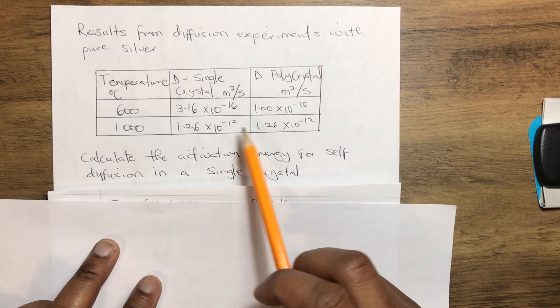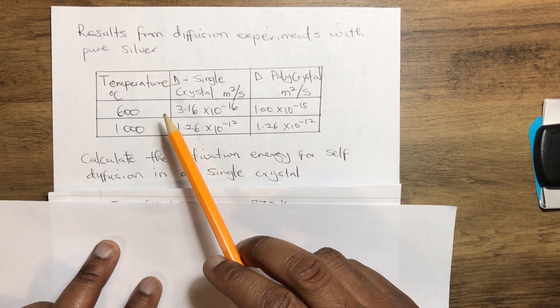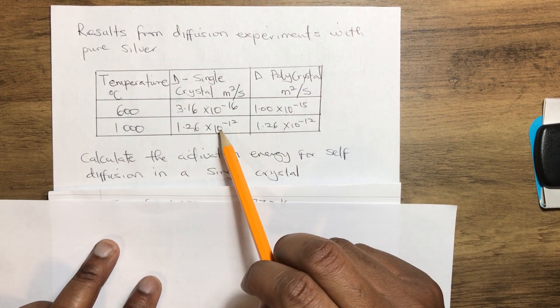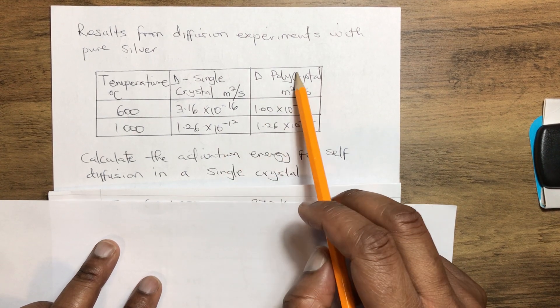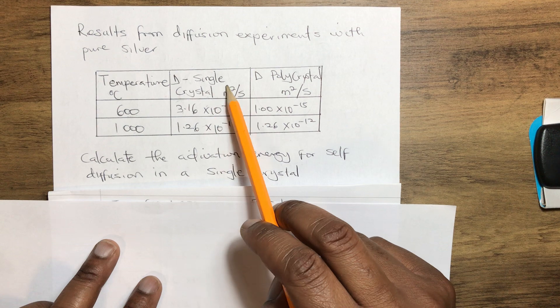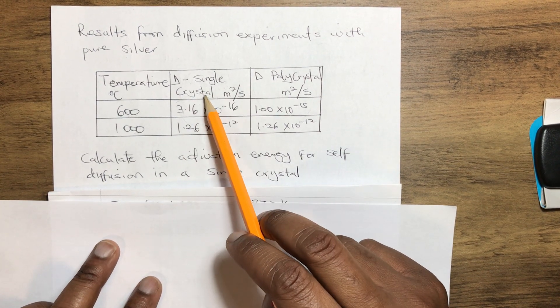Now we have results from the diffusion experiment of pure silver given below, and we have to calculate the polycrystal activation energy since we have already calculated the single crystal.